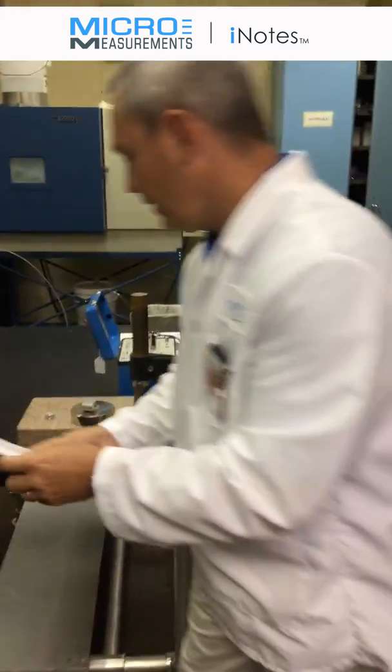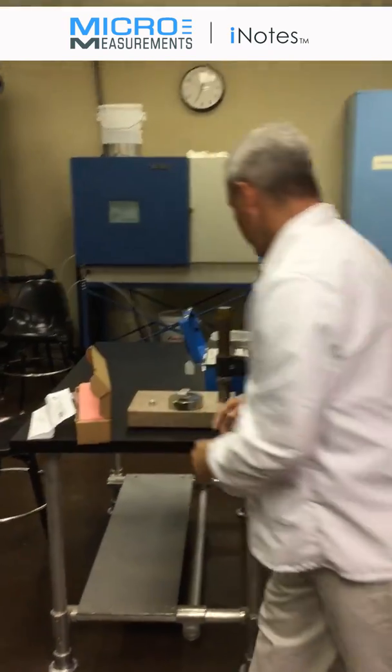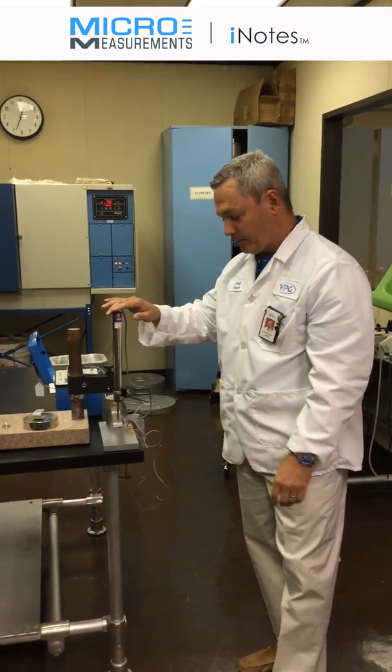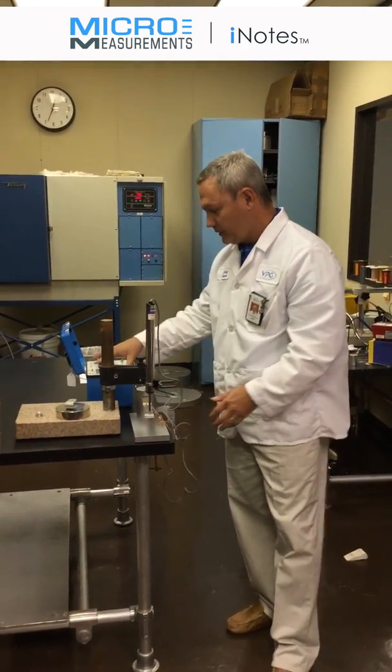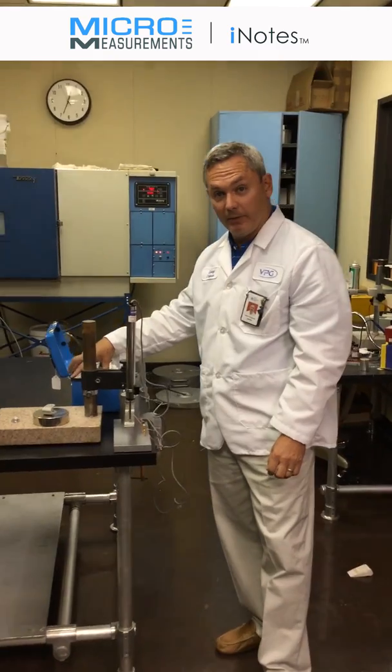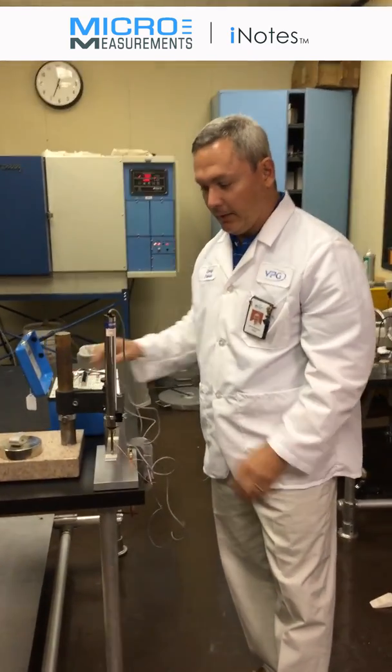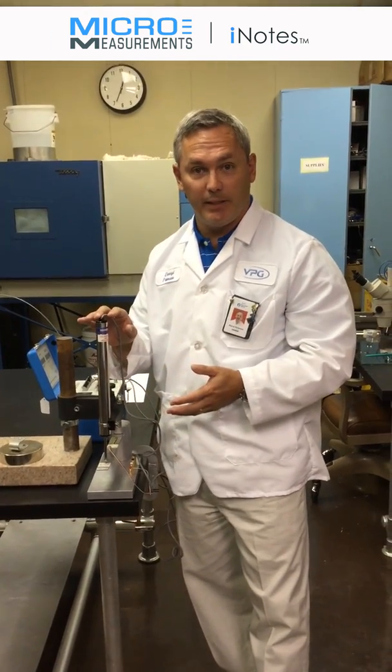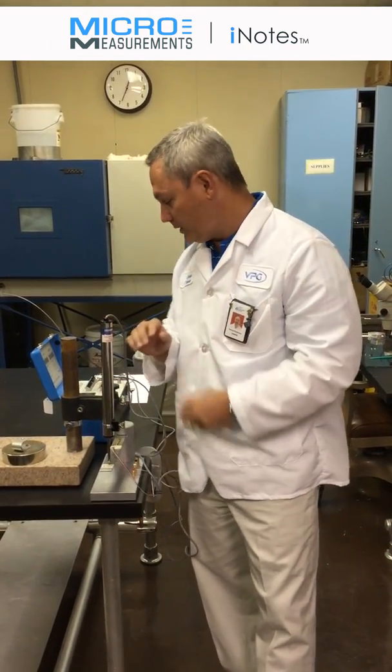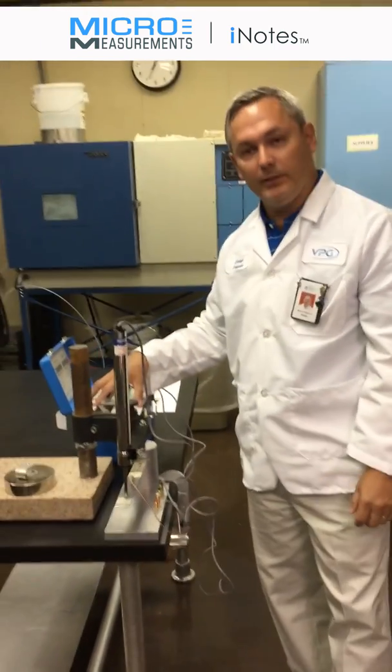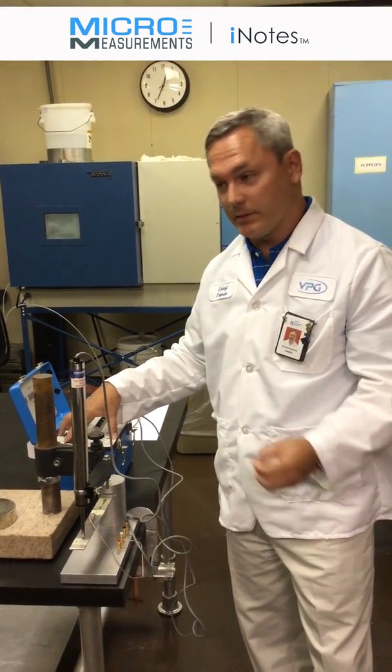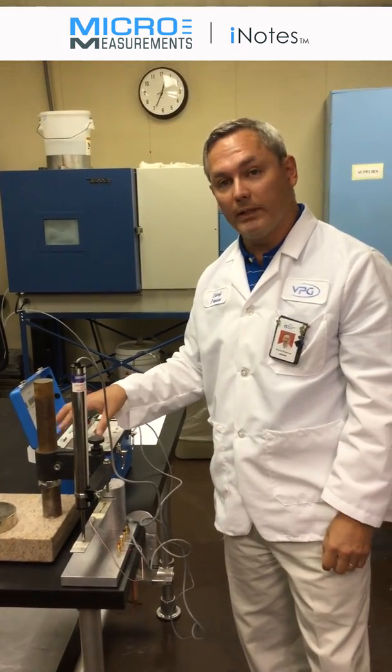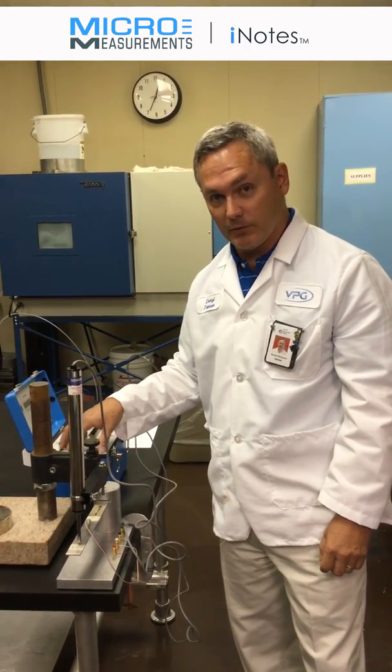Now, I've also got set up one of our HS100s. It's connected into this blue box, which is a model P3 strain indicator recorder. One of the advantages to using these types of sensors is that they're strain gauge based, so you can connect them into any strain gauge instrumentation, whether it's a strain indicator, signal conditioning amplifier, or data acquisition system that's set up for gauges.